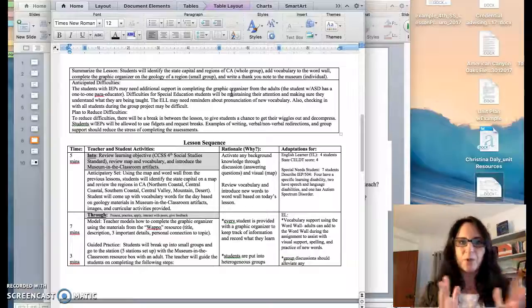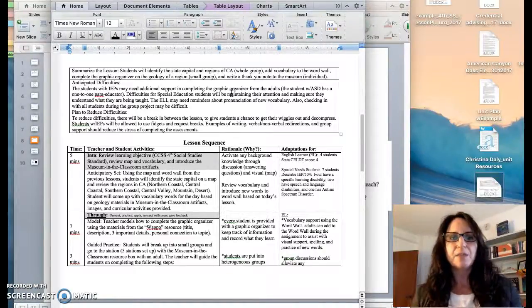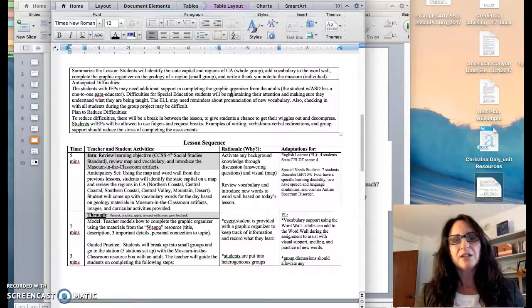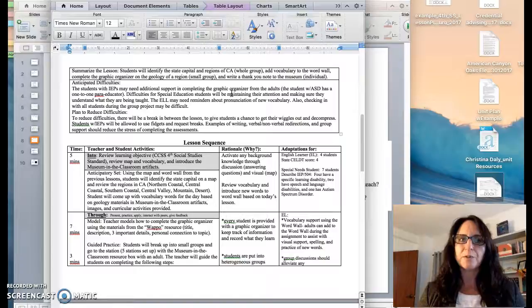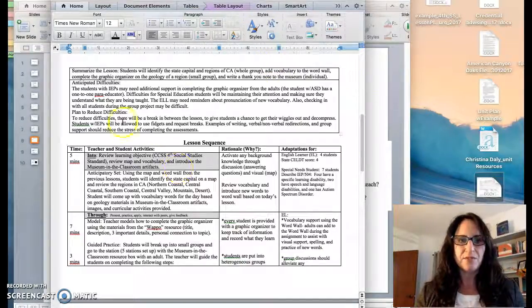Here I have summarized the lesson in one sentence. Basically, students will identify the state capital and regions in California. That's whole group. They'll add vocabulary to the wall, they'll complete a graphic organizer on the geology and information they find out about the regions. That's small group. And then they will write a thank you letter to the museum, and that's individualized.